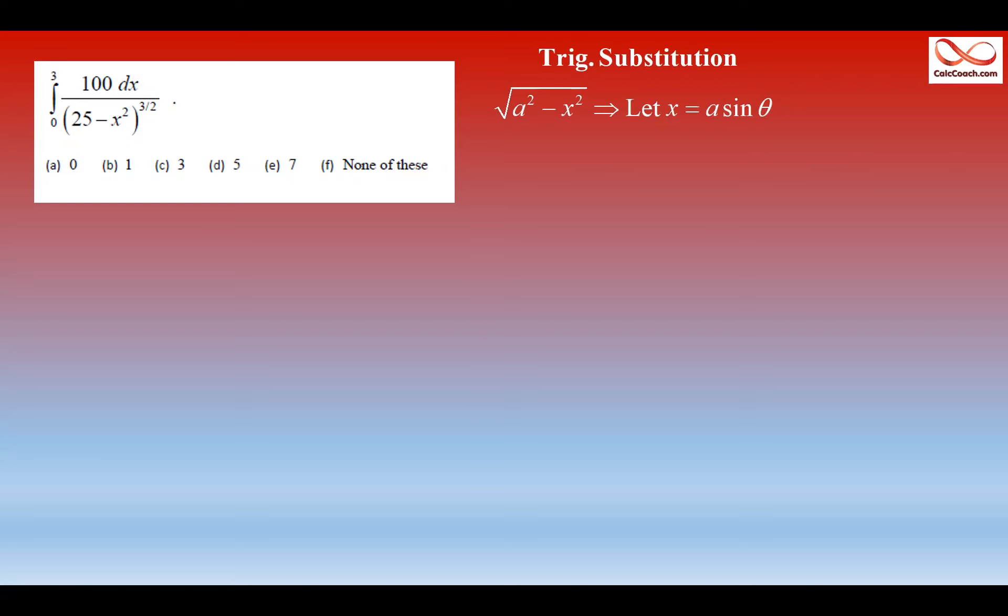If that's the case, you let x equal a sine theta, and there's two others. Flip it around, x squared minus a squared, you would let x equal a secant theta, and then if it's a plus in between, you would let x equal a tan theta.